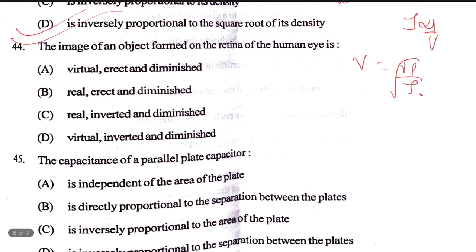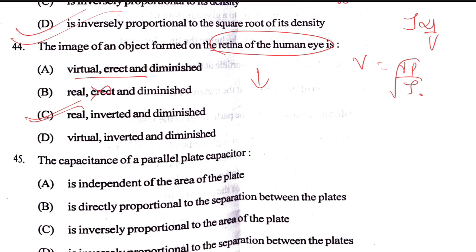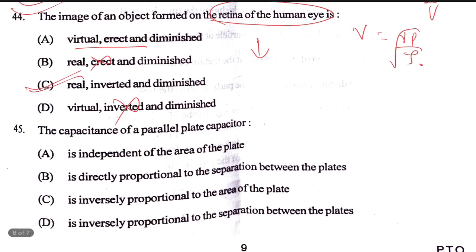The image of an object formed on the retina is real and inverted. A virtual erect image is not formed on the retina. Real erect is not true. The retinal image is real and inverted. C is the right answer.